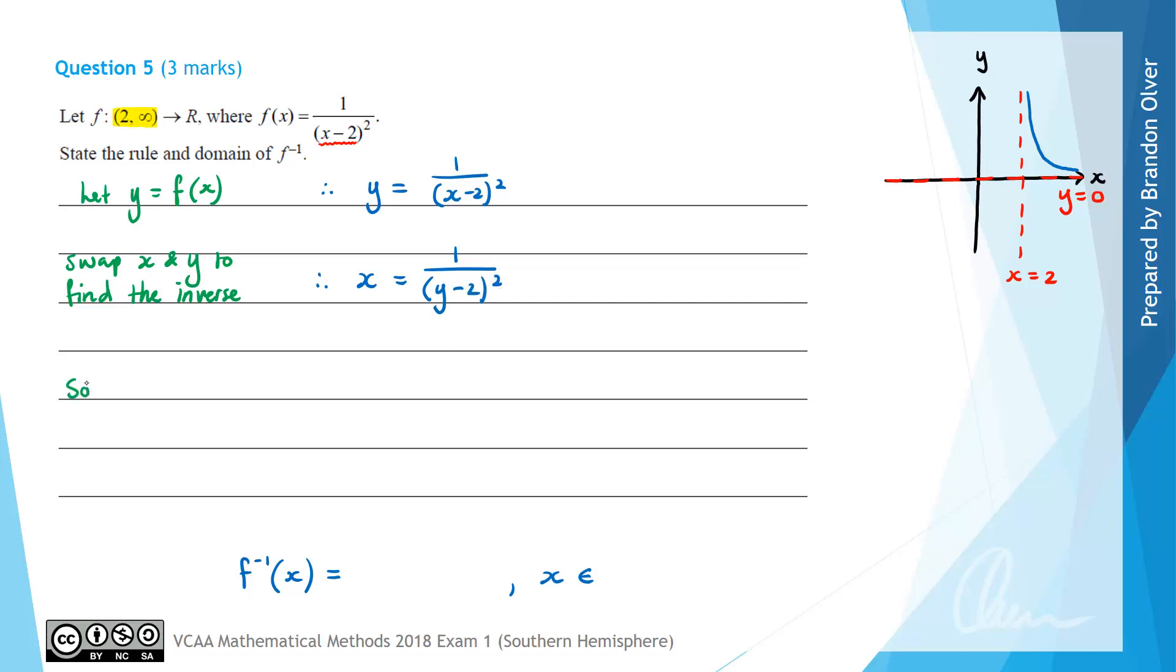Now we need to solve for y. By multiplying both sides by (y - 2) squared and dividing by x we arrive at the line (y - 2) squared is equal to 1 divided by x. If you need to see that intermediate step it would have looked like x times (y - 2) all squared is equal to 1 and that would have been multiplying both sides by the denominator and then dividing both sides by x would give that next line.